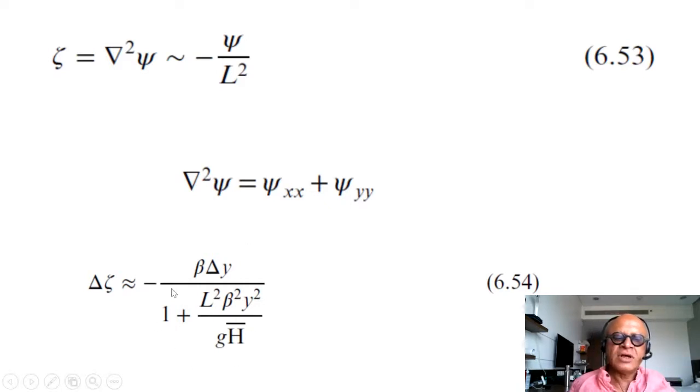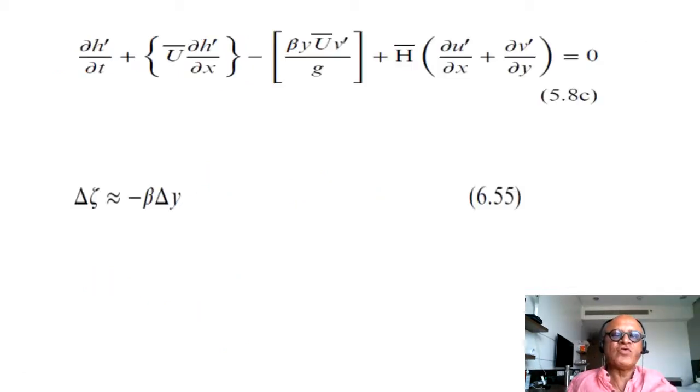That becomes this interesting expression which depends obviously on the perturbation in latitude and beta. Beta obviously matters because that determines how much the delta y is going to translate into changes in planetary vorticity, which creates a response in relative vorticity. And the length scale of the flow as well as the equivalent depth of the fluid.